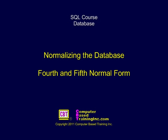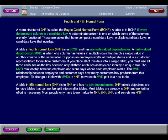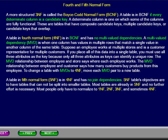Normalizing the Database: 4th and 5th Normal Form. A more structured third normal form is called the Boyce-Codd normal form. A table is in Boyce-Codd normal form if every determinate column is a candidate key. A determinate column is one on which some of the columns are fully functional.